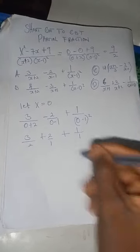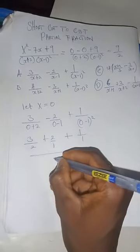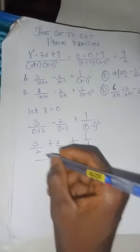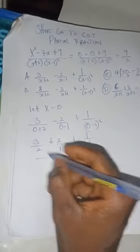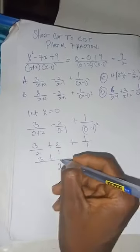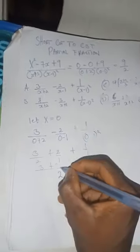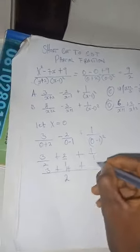Taking the LCM of these, we have the LCM as two. So we have one times three, that's three, plus two times two, that's four, plus two times one, that's two.